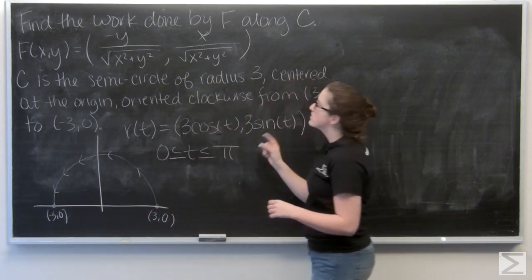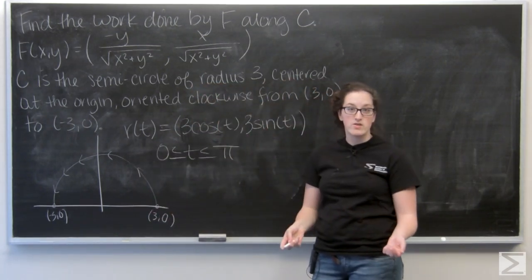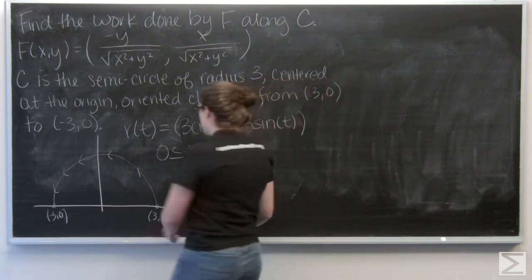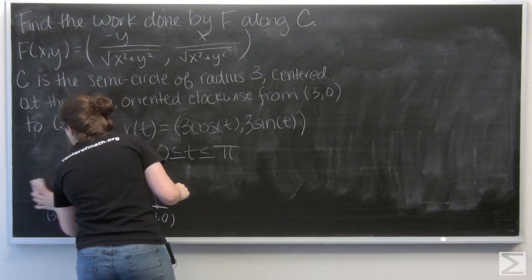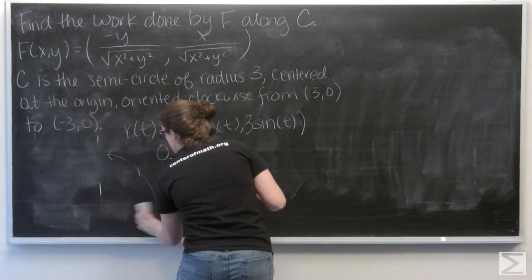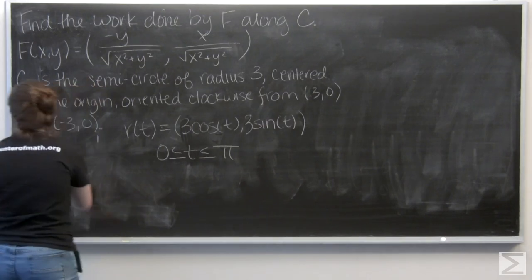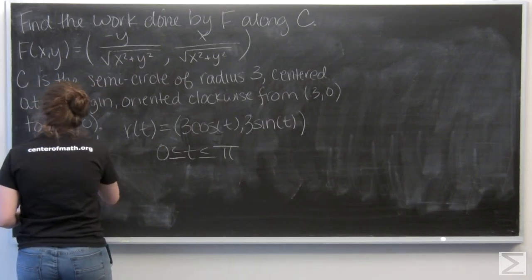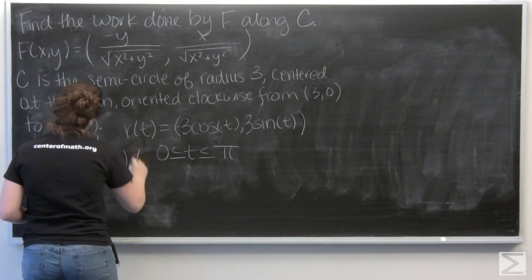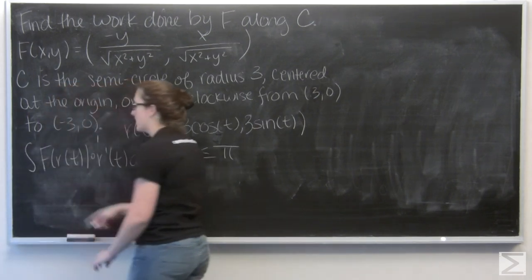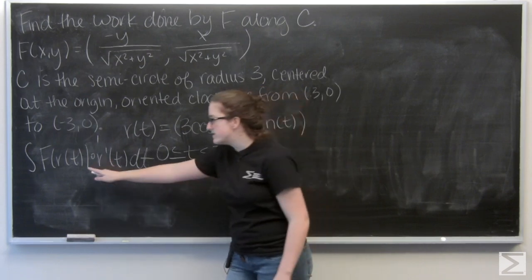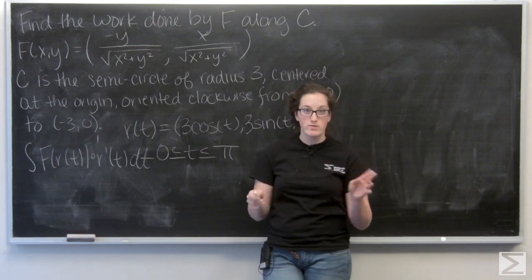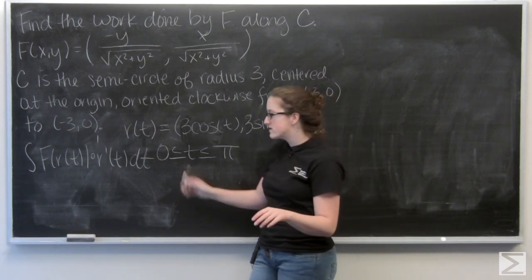Okay, so to calculate the work done by F along C, I want to calculate the line integral of F. And let me write out the general formula for that. So I have the integral of F(r(t)) dot r'(t) integrated with respect to t on whatever bounds we have for t. So here it's going to be 0 to π.